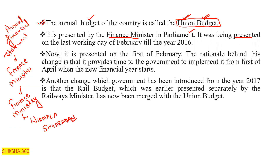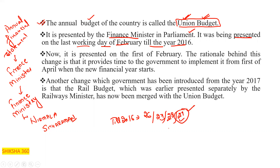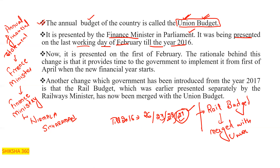The budget was presented on the last working day of February until the year 2016 — either the 26th, 27th, 28th, or 29th (in leap years). After 2016, there was a change in trend. Earlier there was also a separate Rail Budget, but later the Rail Budget was merged with the Union Budget.